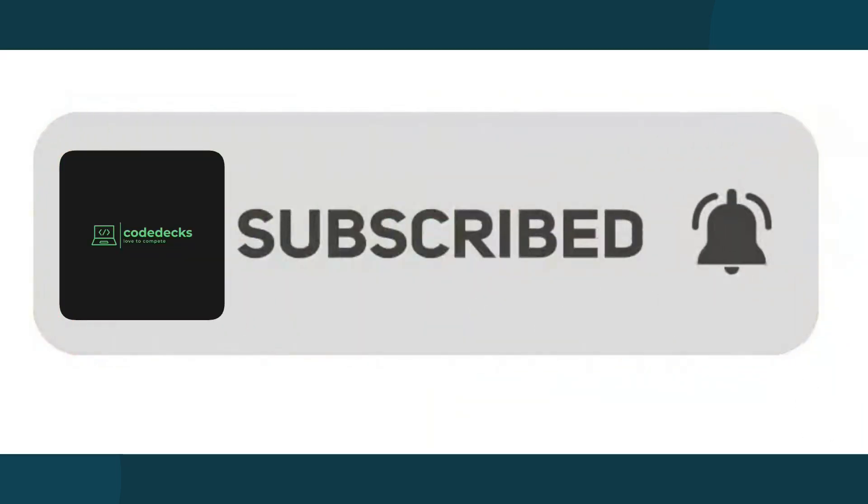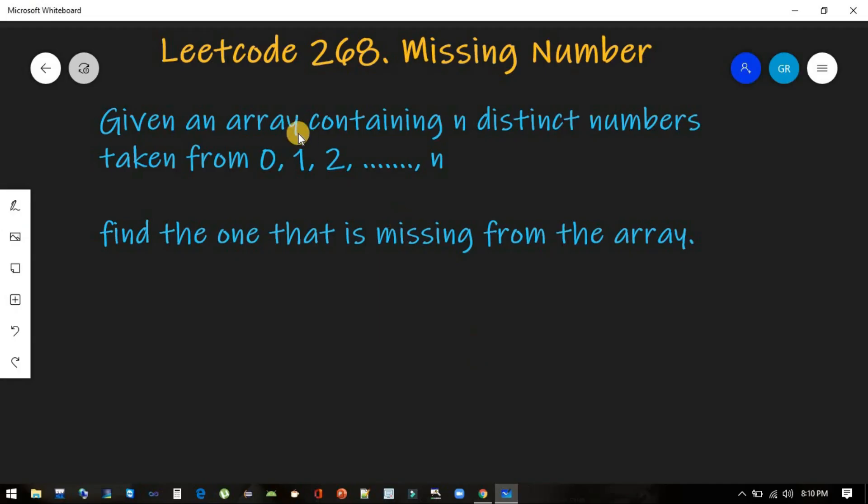Problem description first. So it says given an array containing n distinct numbers taken from 0 till n, find the one that is missing from the array.